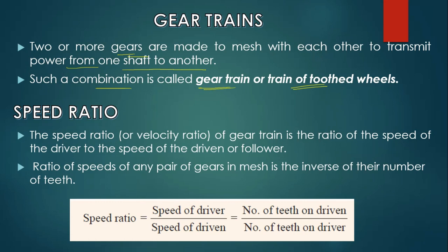The speed ratio of a gear train is the ratio of speed of the driving gear to the driven gear. Speed ratio equals speed of driver divided by speed of driven, which is equal to the number of teeth on driven divided by number of teeth on driver. So: speed of driver divided by speed of driven equals number of teeth on driven divided by number of teeth on driver — both are inverse.